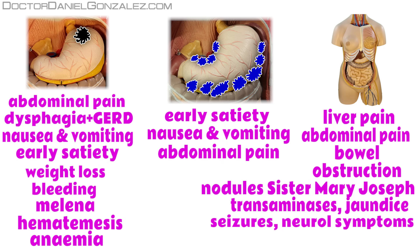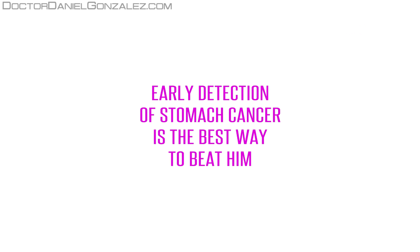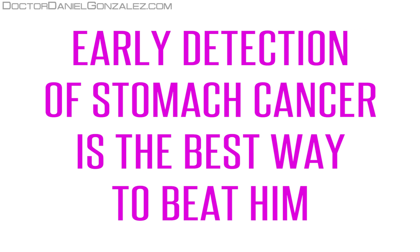Epileptic seizures or neurological deficits can occur if the brain is affected. Or we can suffer cough, hemoptysis or dyspnea if metastasis are located in the lungs. It is very important to know the symptoms of stomach cancer because early detection of stomach cancer is the best way to beat it.